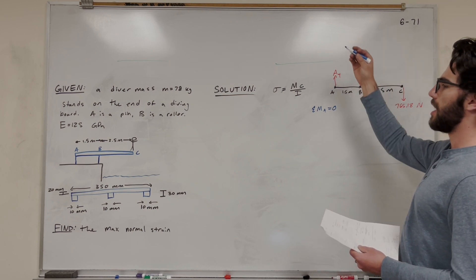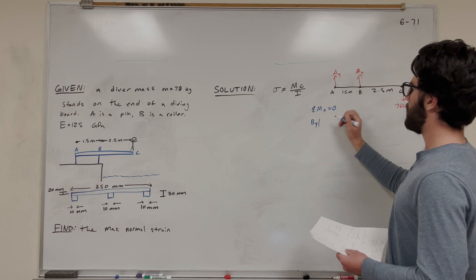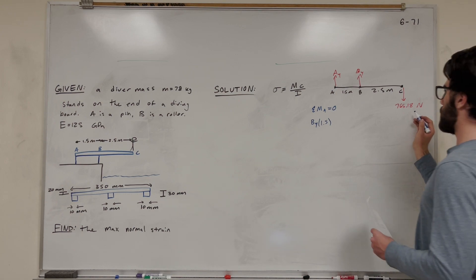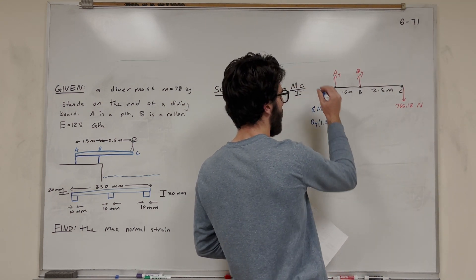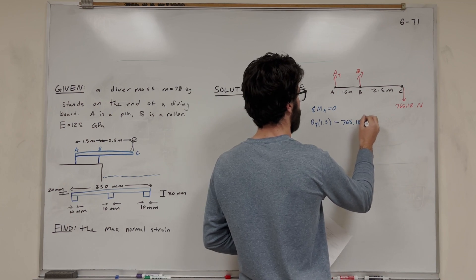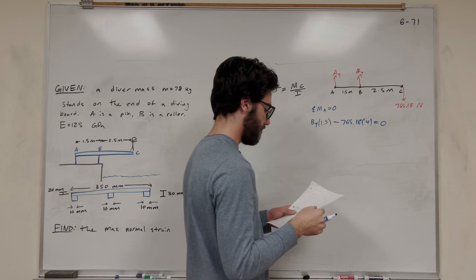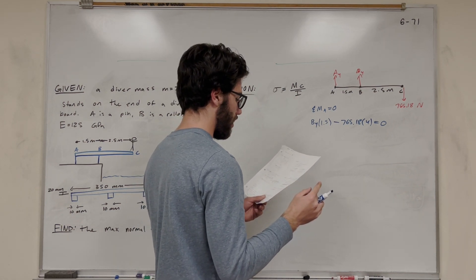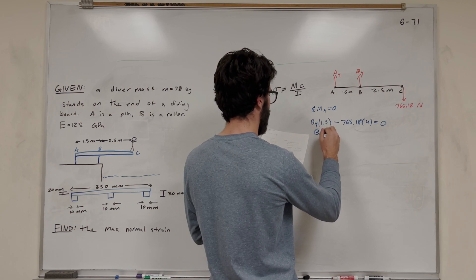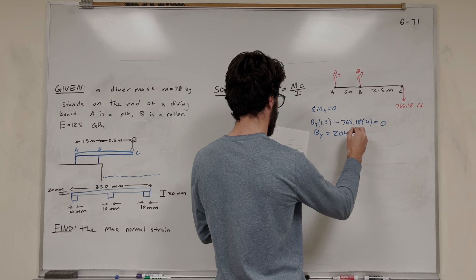B_y is pushing us counter-clockwise, so we have a positive B_y multiplied by the distance of 1.5 meters. Then this weight force is pushing downward, making us want to go clockwise. So we subtract 765.18 times the distance of 4. Set that equal to zero, move it over to the other side, divide by 1.5, and we find that B_y is equal to 2040 newtons.